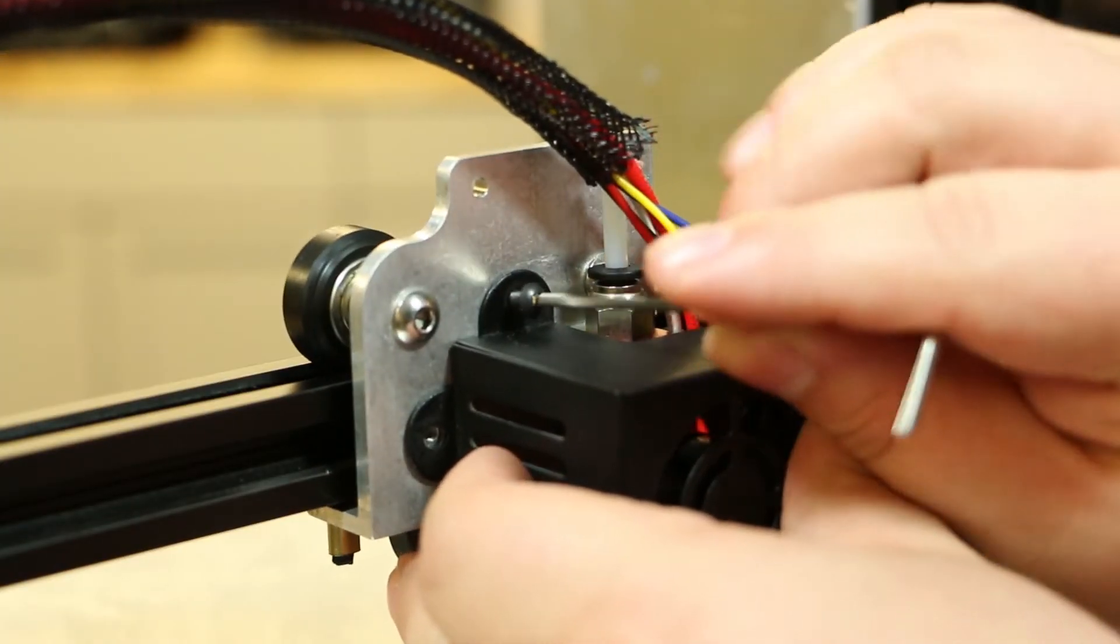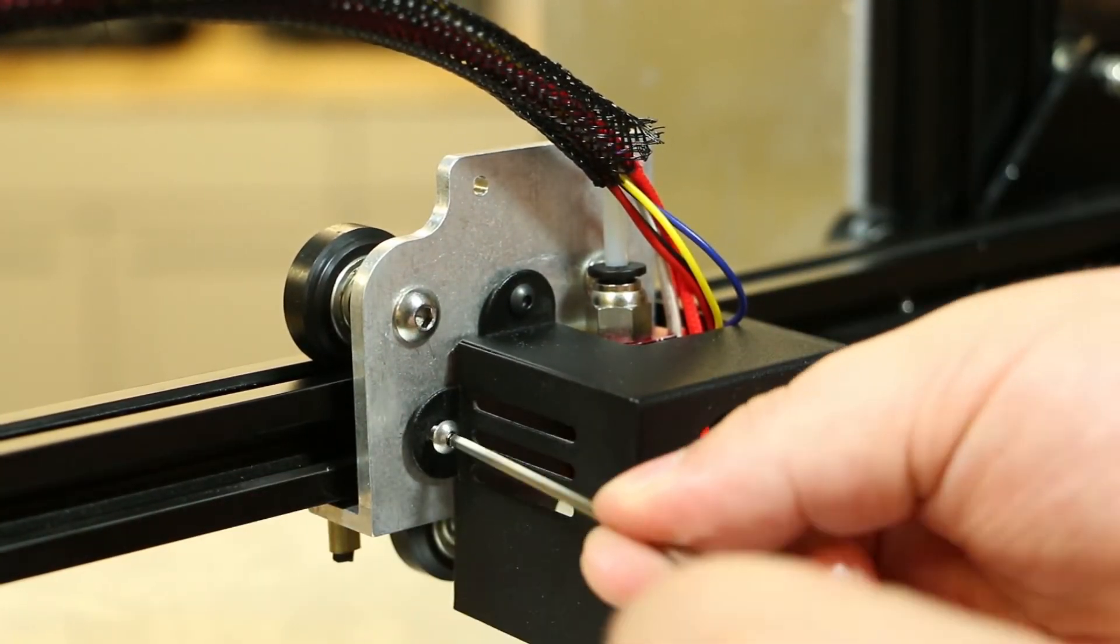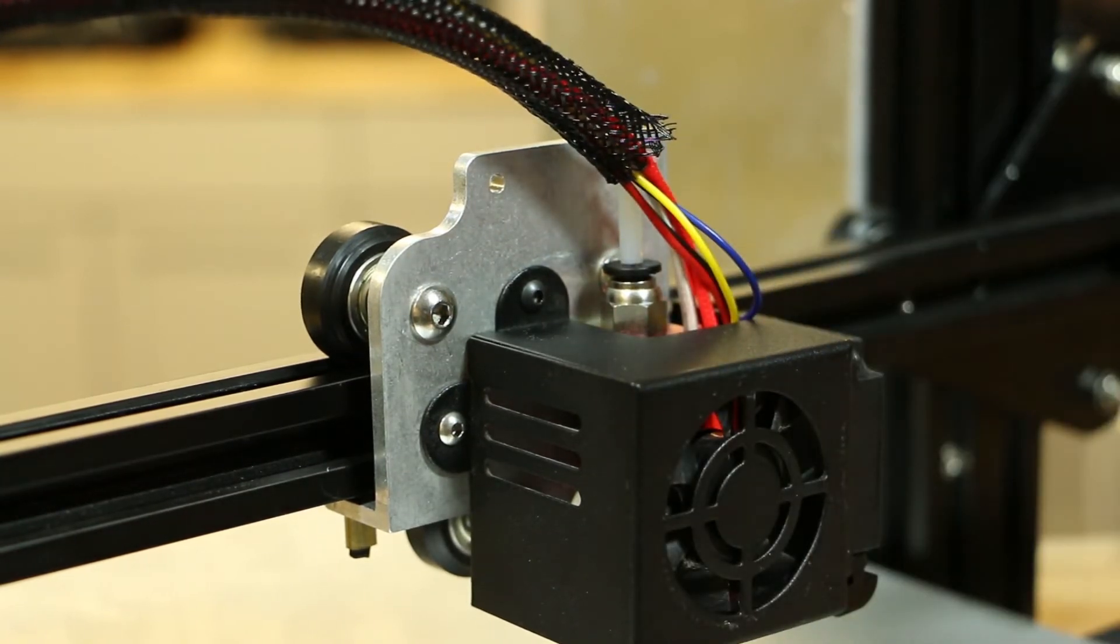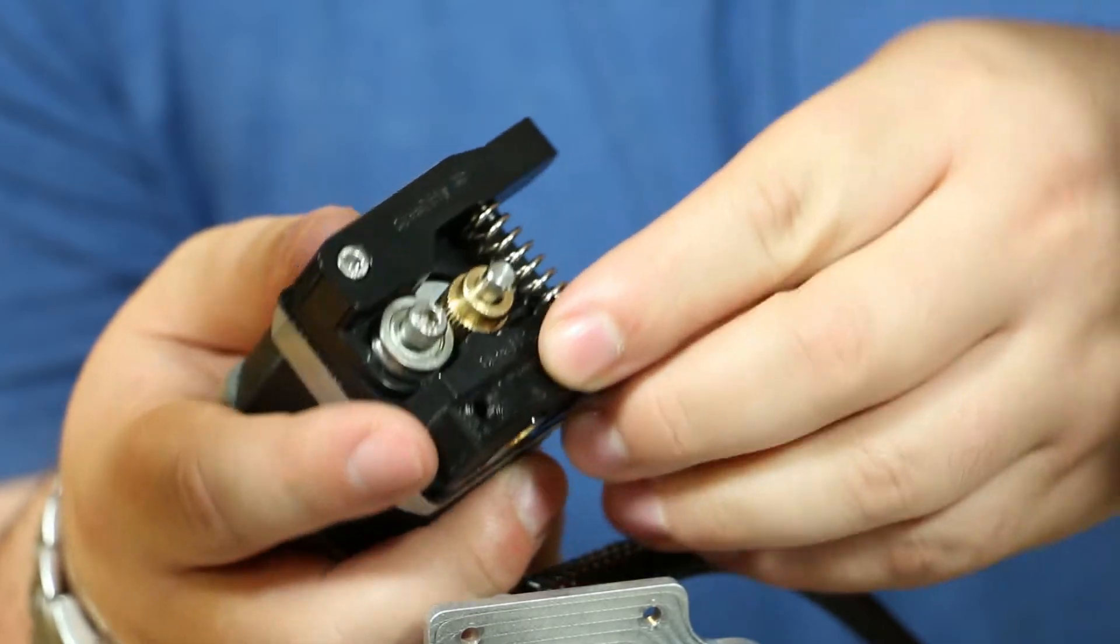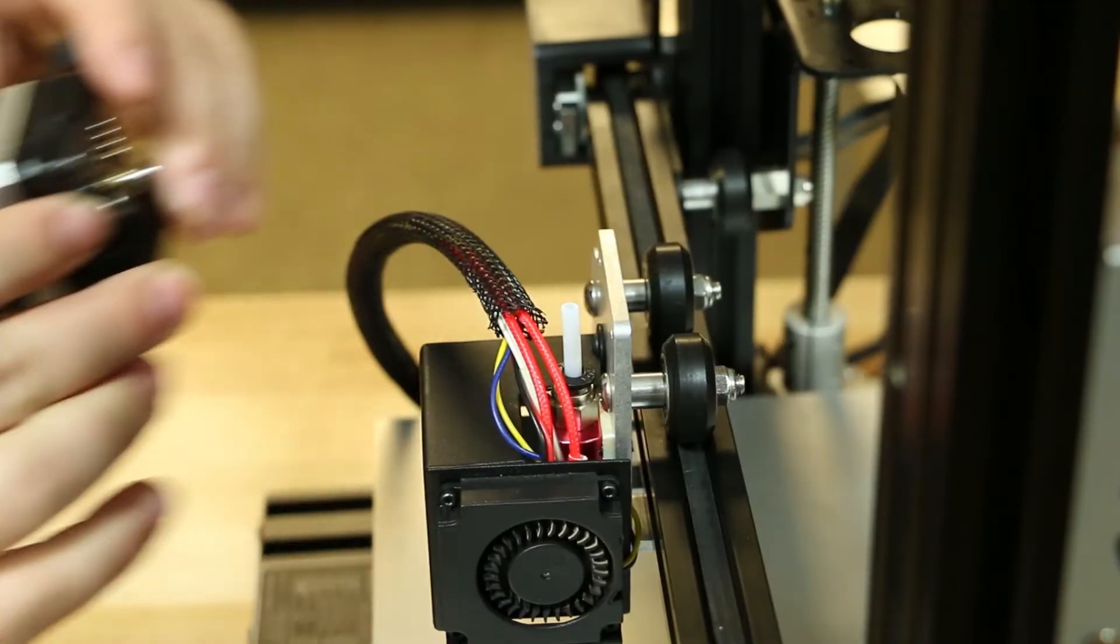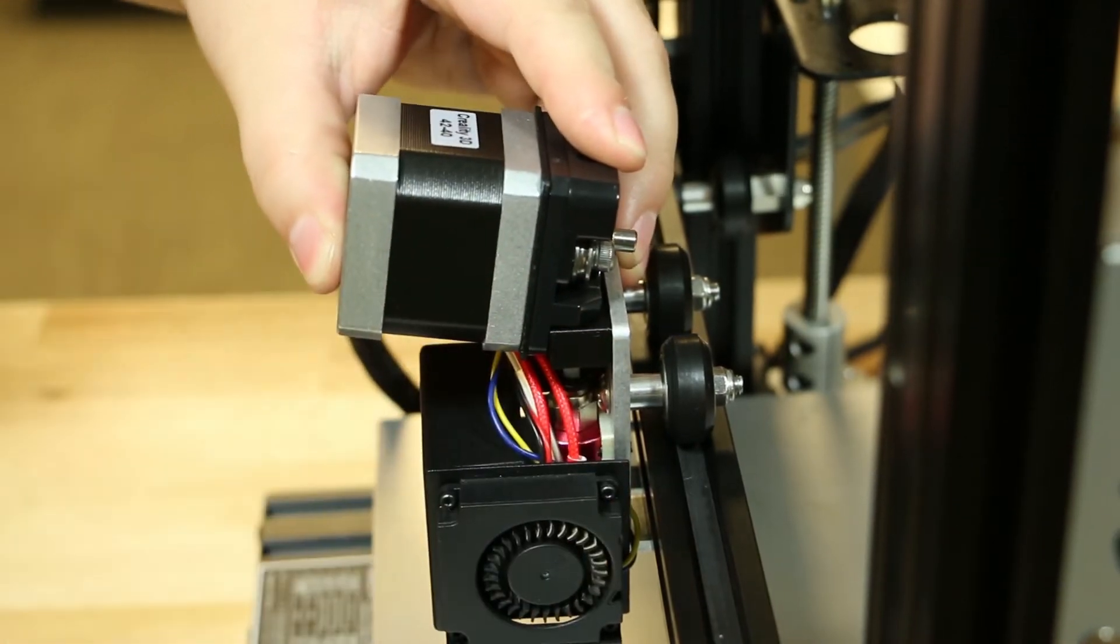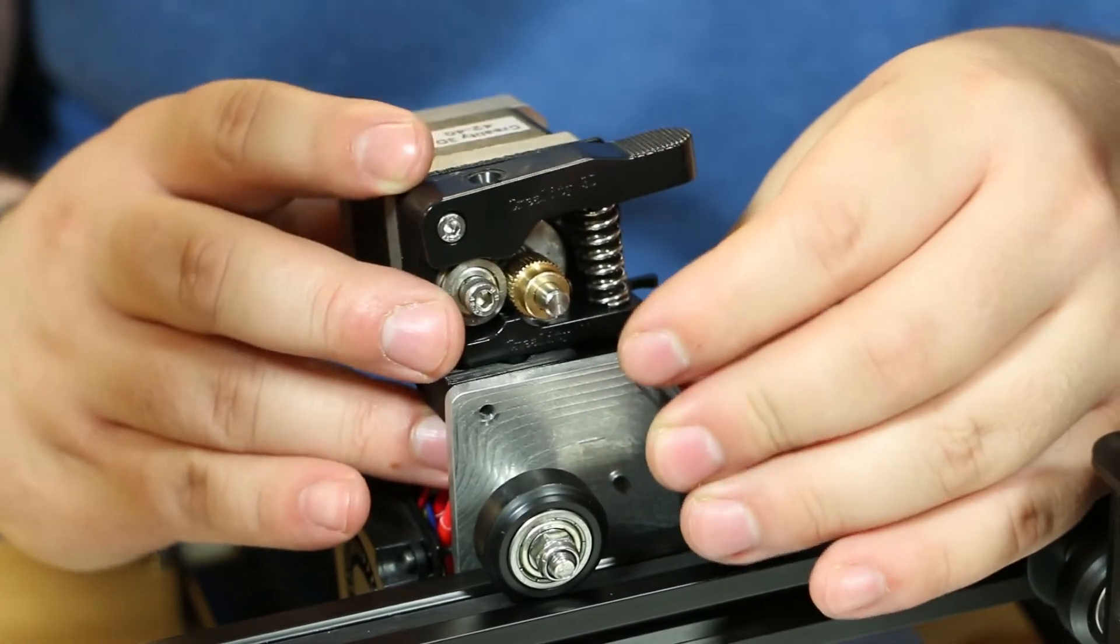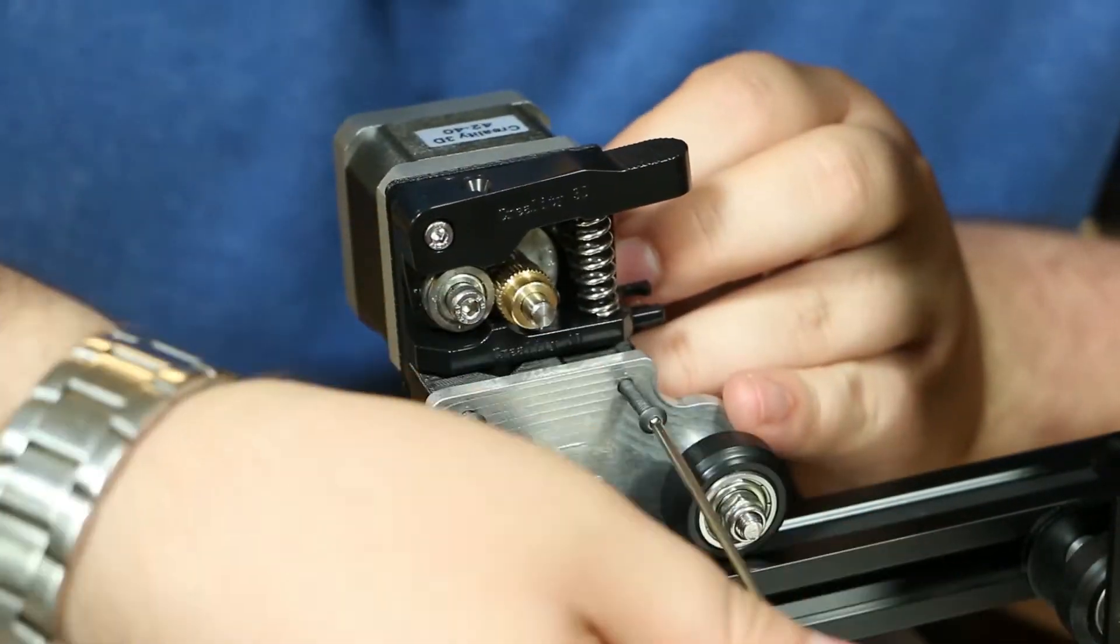Next, take your fan shroud and attach it to the X-axis carriage. Attach the motor spacer mount to the extruder and then line up the space where the Bowden connector was with the PTFE tubing. Slide in from the back the long screws from the kit into the carriage and then into the extruder. Make sure to tighten the screws so it holds the extruder in place.